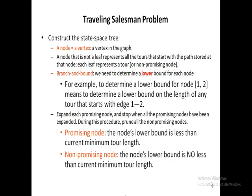If the lower bound of a node is greater than or equal to the current minimum tour length, we cannot get an optimal solution through that node, so we prune it — that node is known as a non-promising node. In the next few classes, we will discuss the problem further. Today's session ends here. Thank you very much.